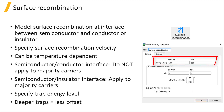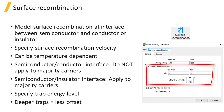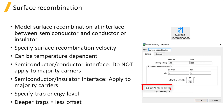A higher surface recombination velocity means more recombination at the surface. In addition, surface recombination velocity may be temperature-dependent, and a model can be used to represent this in a surface recombination boundary condition. When applying surface recombination at the interface between a conductor and a semiconductor, due to numerical stability reasons, the surface recombination should not be applied to the majority carriers. This is accomplished by unchecking the Apply to Majority Carriers option, which is the default state for a newly added boundary condition. This assumption is appropriate at a conductor interface where the doping concentration is large.